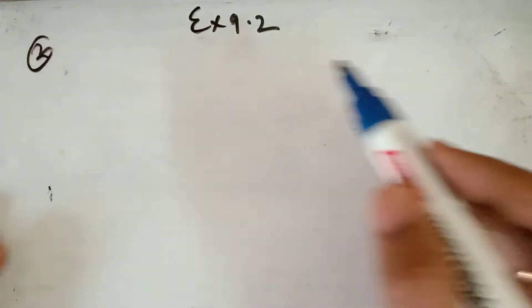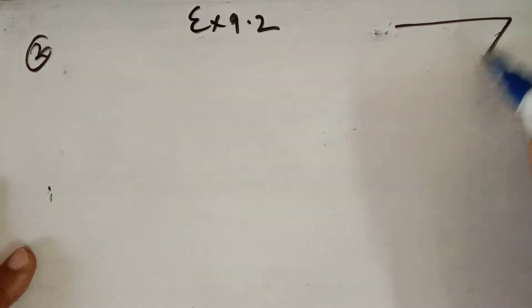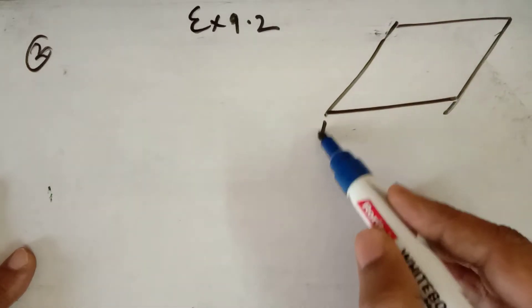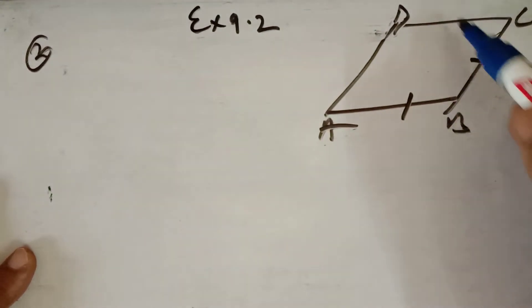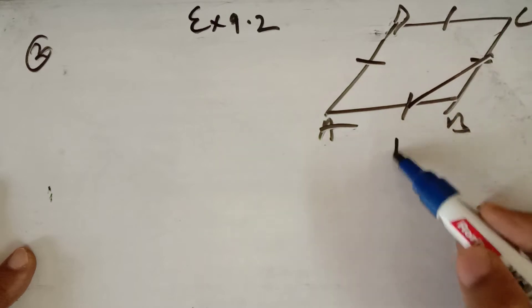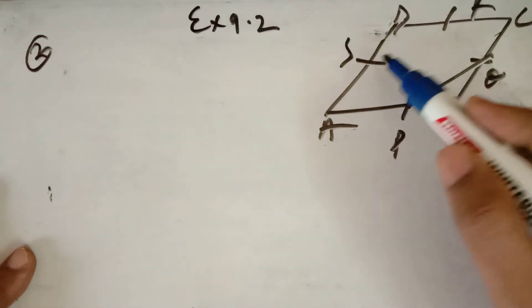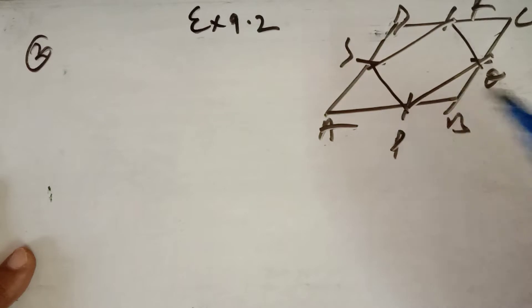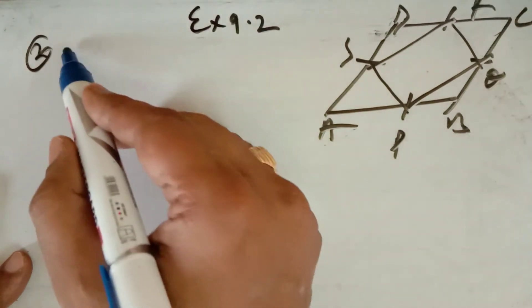Now in question number 2, you have to prove that EFGH — taking the midpoints of the sides of a parallelogram ABCD, whose midpoints are given as P, Q, R, S — first you have to prove that PQRS is a parallelogram (which you have done in the chapter on triangles), and then you have to prove that the area of PQRS is half the area of parallelogram ABCD.